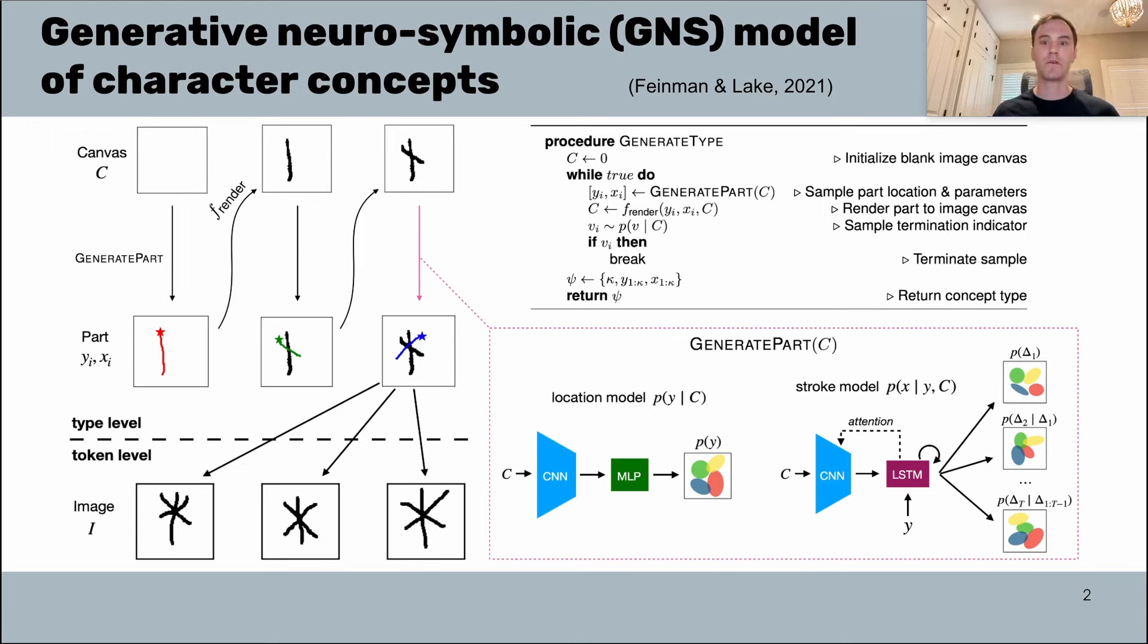After we sample the next part, we have all the specification for the part that we need and we render this stroke to our image canvas using a symbolic renderer. We sample a termination indicator which tells us whether to stop or to continue with another stroke, and we repeat this process until we reach termination and then return the final character type.